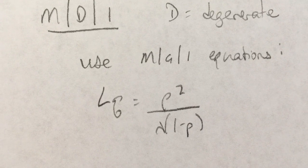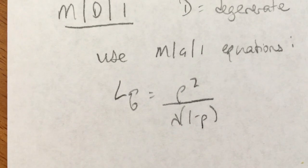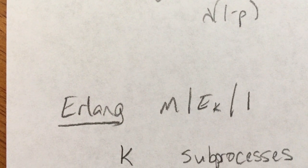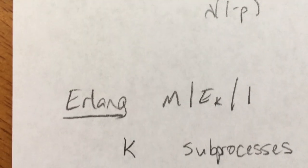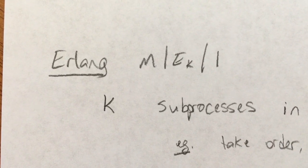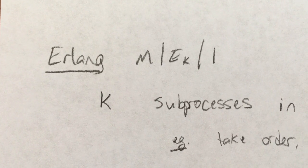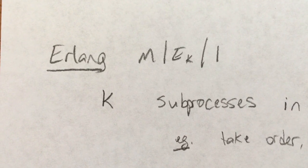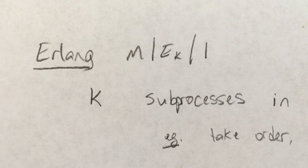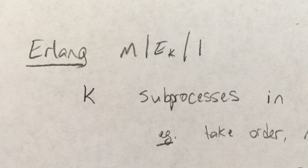One more: Erlang. Erlang is an M/E_K/1. So what is E_K talking about? Well, in an Erlang, in a system where we're going to use the Erlang, you have K subprocesses in your service. So it's K tasks that have to happen sequentially. So let's say you walk into a coffee shop and there's only one person working, and that person is going to take your order and then make your order and then serve it to you.